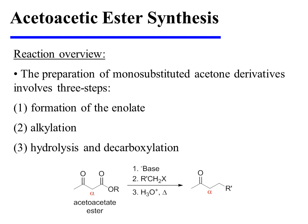The preparation of mono-substituted acetone derivatives involves three steps: formation of the enolate, alkylation, and hydrolysis and decarboxylation. The net result is the installation of a single substituent on an alpha carbon of acetone.